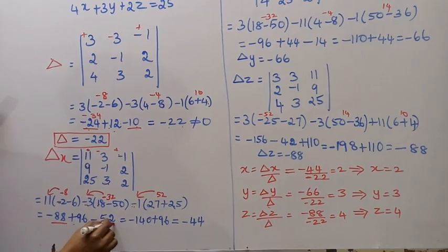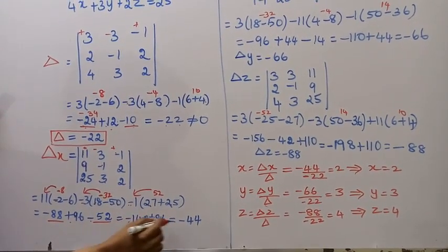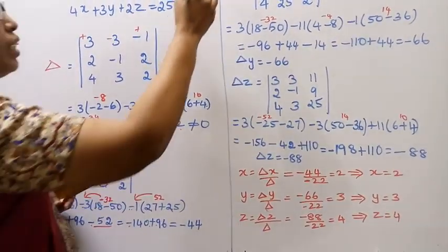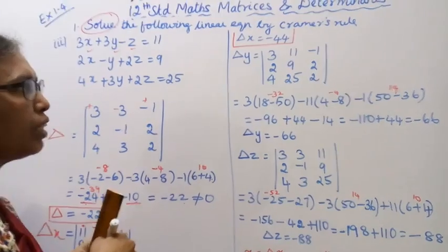So minus 88 minus 52 minus 140 plus 96, that is equal to minus 44. Delta x, we get delta x minus 44.